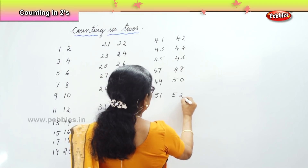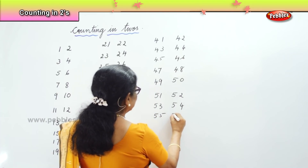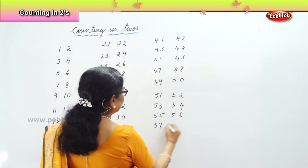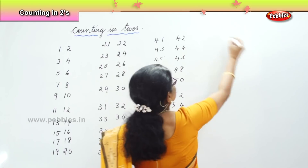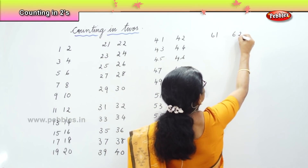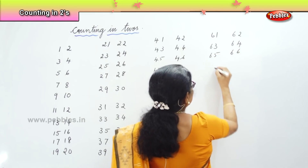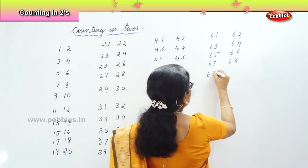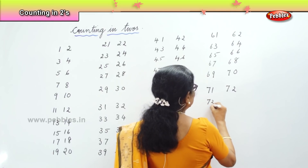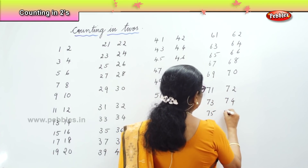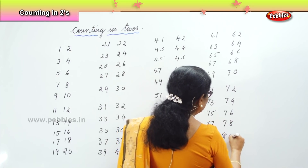Next: 51, 52, 53, 54, 55, 56, 57, 58, 59, 60. We go on further — 61, 62, 63, 64, 65, 66, 67, 68, 69, 70. Go on — 71, 72, 73, 74, 75, 76, 77, 78, 79, 80.